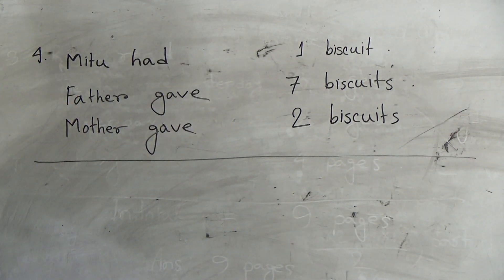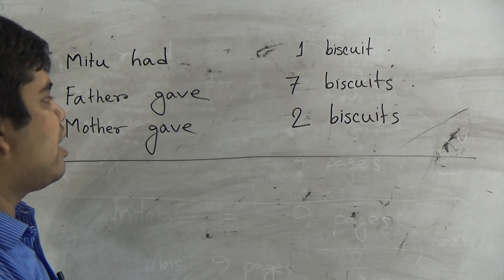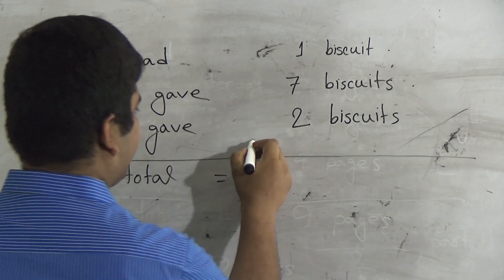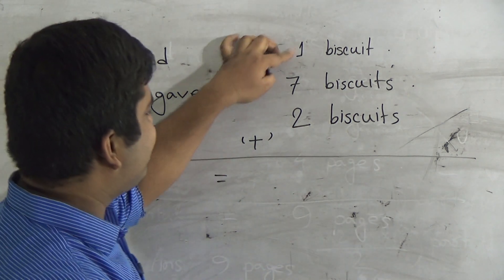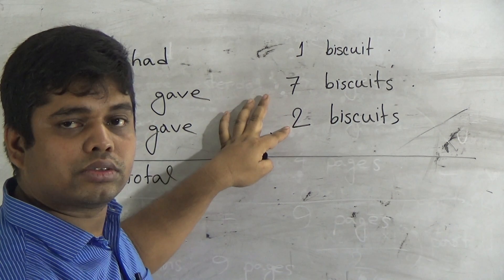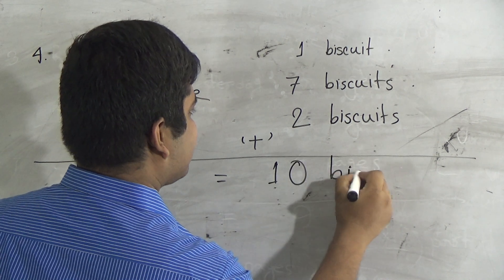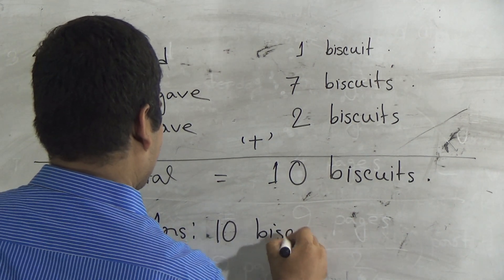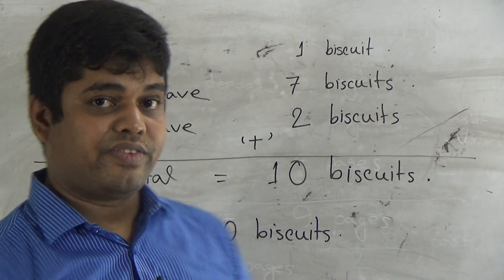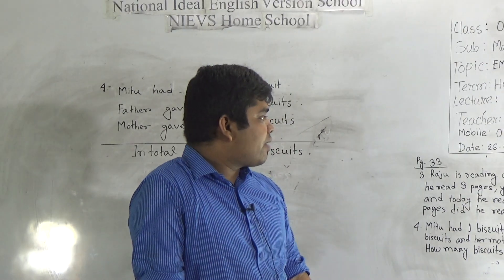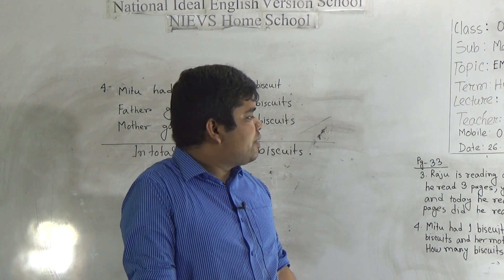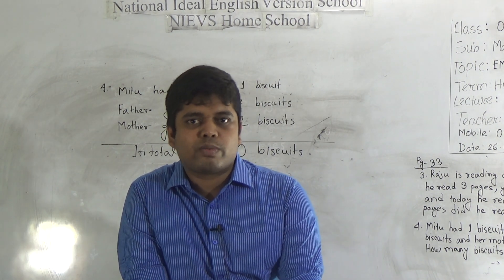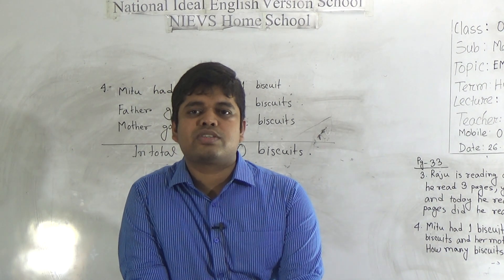Now we do addition in order to find out the total number of biscuits Meetu had in total. You must give the plus sign here. Seven plus one equals eight, and eight plus two equals ten. So we write ten biscuits — this is the answer of this question. My dear students, I know you are very smart learners and you can easily understand how to solve this type of word problem. You must do your assigned SW in your SW copy and submit it regularly at school every Saturday within 9 a.m. to 3 p.m. Keep practicing at home with your parents. See you soon. Till then, Assalamu alaikum.